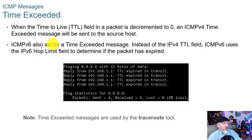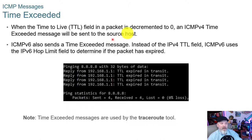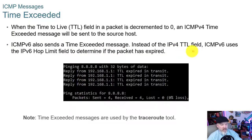For time exceeded, when the time-to-live field in a packet is decremented to zero, an ICMPv4 time exceeded message is sent to the source host. ICMPv6 also sends a time exceeded message, but instead of the v4 TTL field, v6 uses the hop limit field to determine if the packet has expired. When it reaches the end of its hop limit, it sends a message back indicating time was exceeded.